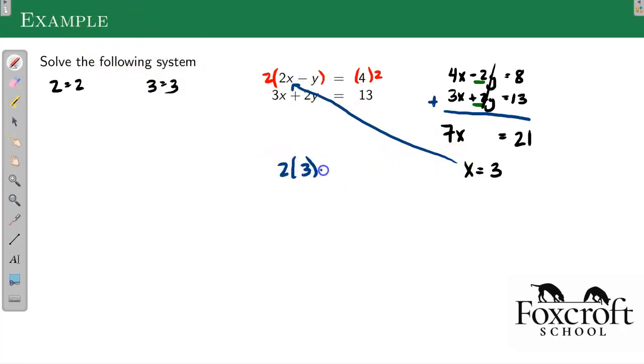2 times 3 plus y equals 4. Subtract 6 from both sides. Multiply both sides by negative 1. Together, now I know x is 3, y is 2.